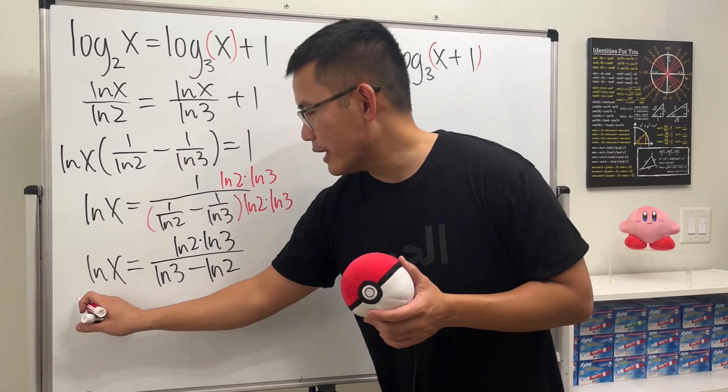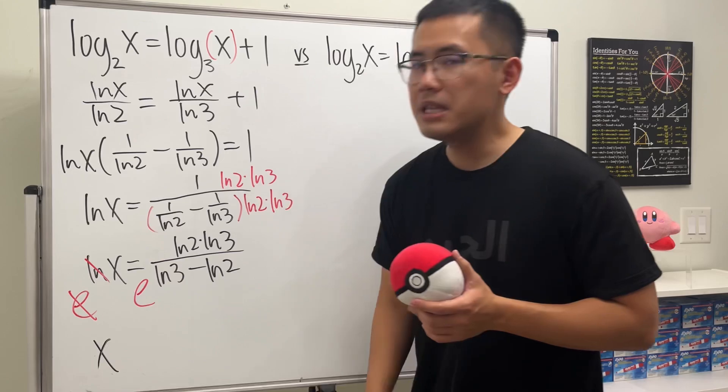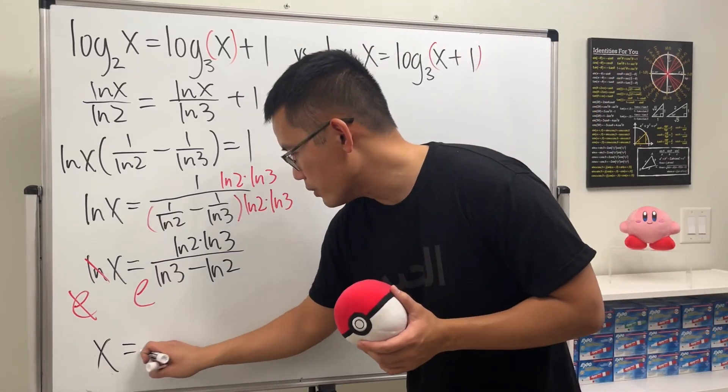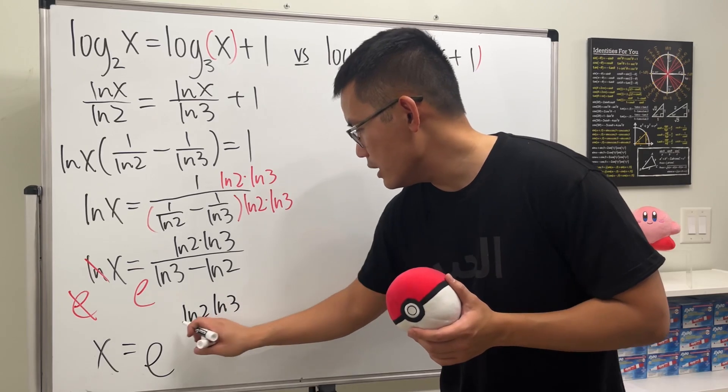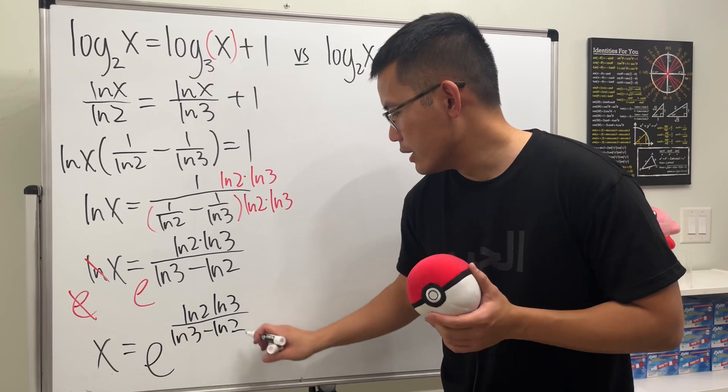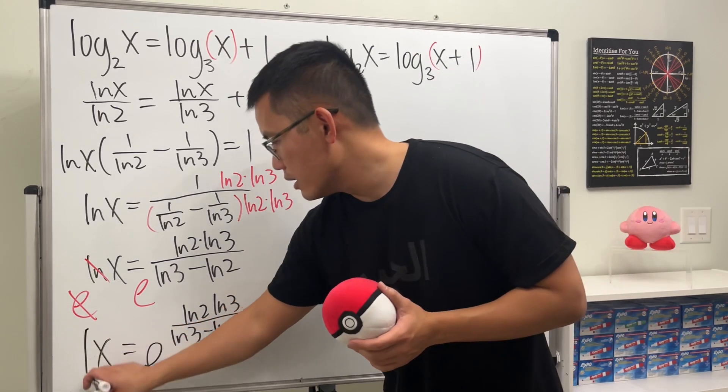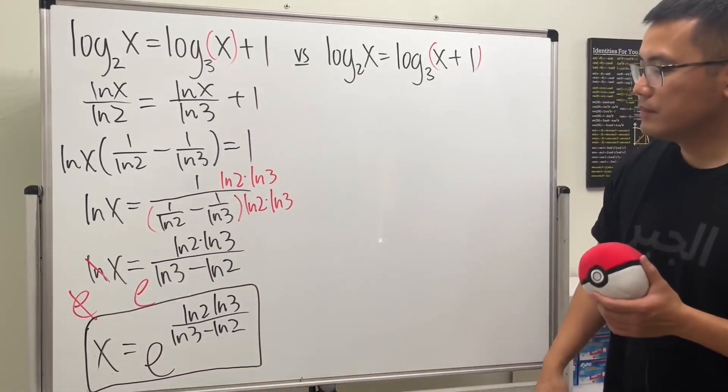Lastly, we just have to exponentiate both sides, meaning e to this power and e to that power. So ladies and gentlemen, x is equal to e, and then we have ln 2 times ln 3 over ln 3 minus ln 2. So it's a pretty looking answer, in my opinion. Alright, so that's pretty much it.